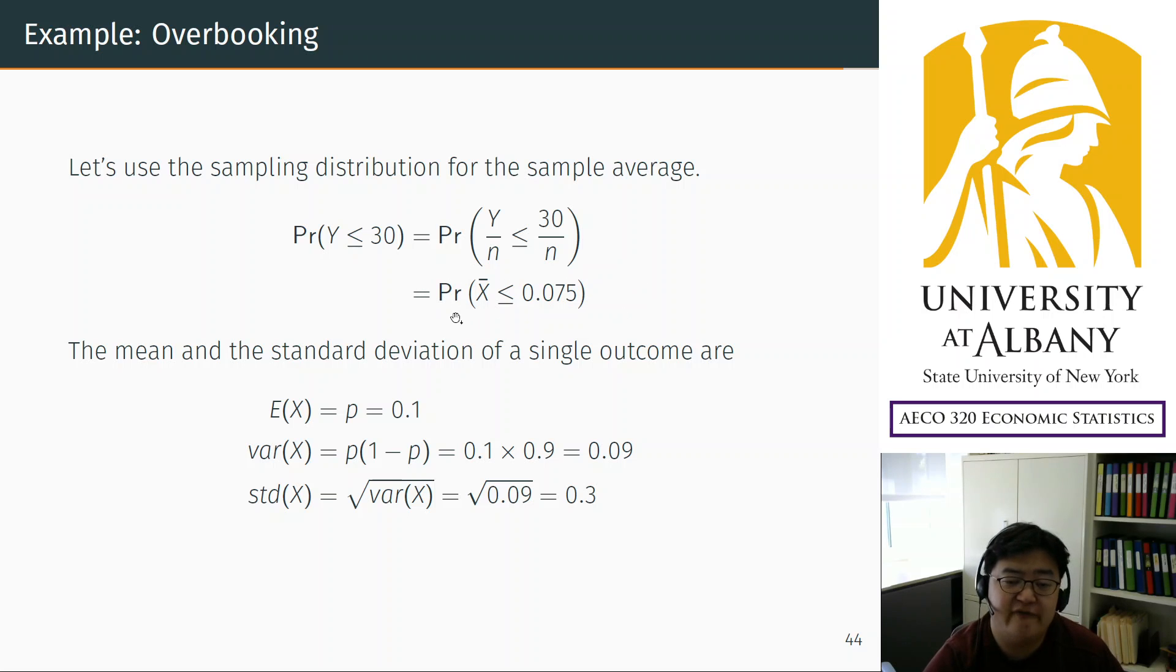To do that, first thing we have to do is calculate the mean and the standard deviation for the single outcome. In this case, the mean and variance for the single outcome is for one reservation, which is a binary distribution, which is well known. We know for a single outcome binary variable, mean is p, variance is p times one minus p. So we can calculate those numbers. We have found these results from chapter 5.